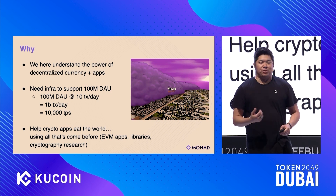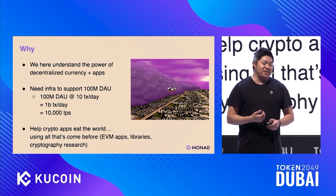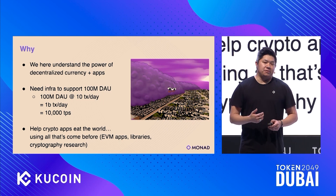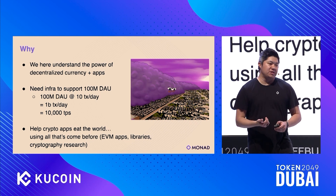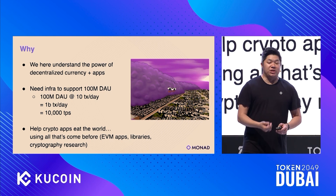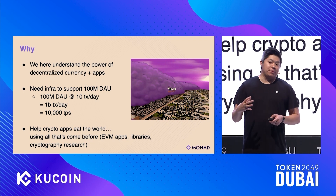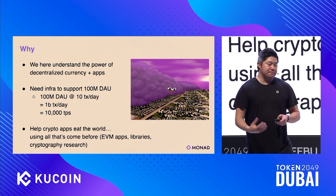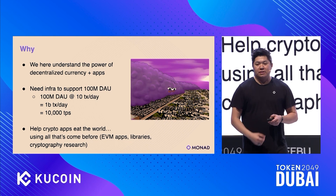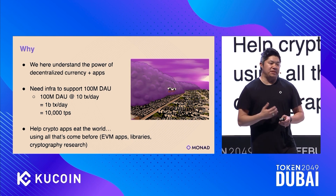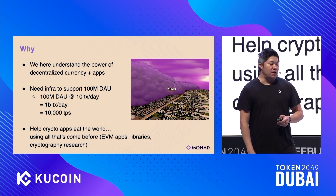Why does this matter? All of us understand the transformative power of decentralized currency and decentralized applications, but we need to scale those to hundreds of millions of users. Doing simple math: 100 million daily active users doing 10 transactions per user per day is a billion transactions per day — which corresponds to 10,000 TPS. 100 million DAUs is not a crazy level of adoption, but it requires better infrastructure. Our goal is to see wider cryptocurrency adoption and help crypto apps eat the world. Thanks so much.